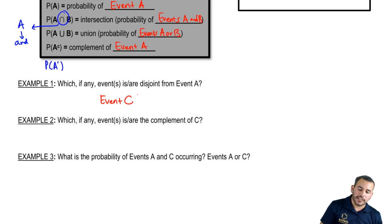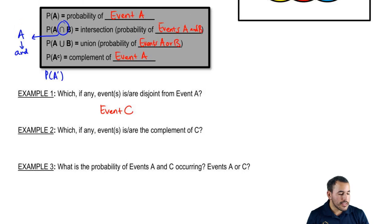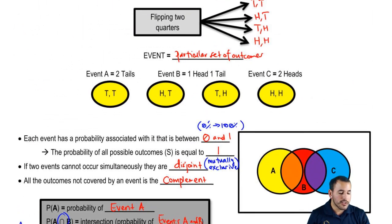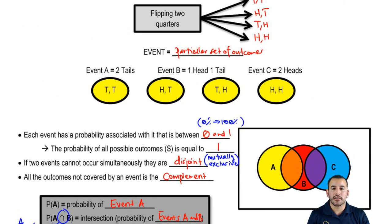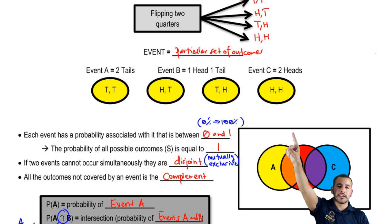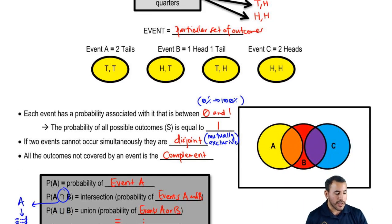Now which, if any, events are the complement of C? Now the complement of C, so C is in particular two heads, right? So the complement of two heads are all the other outcomes. So the only outcomes that C takes into account is heads, heads, right? So all other outcomes are events A and B.